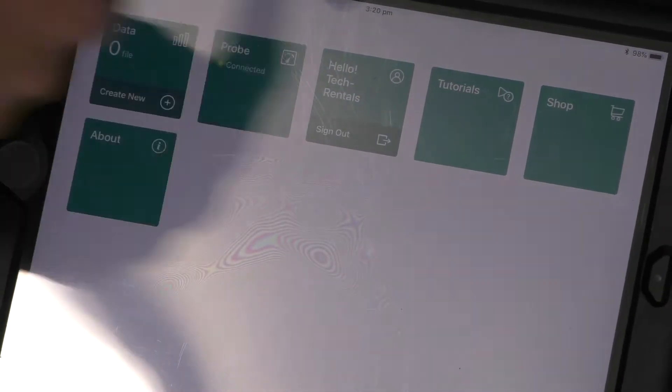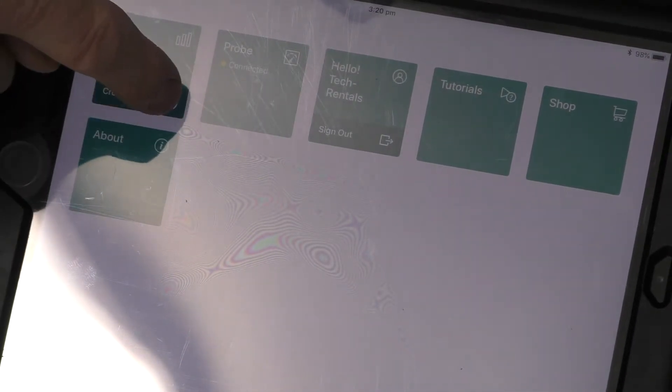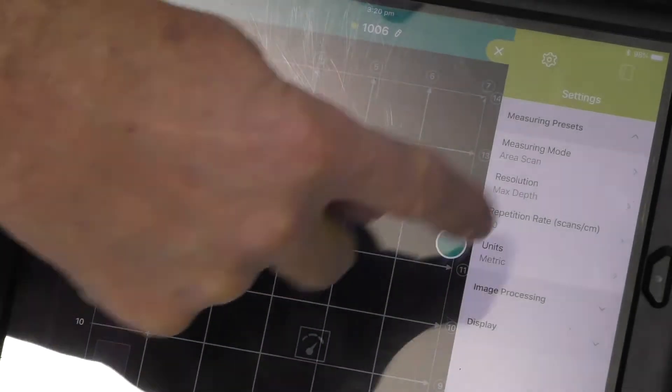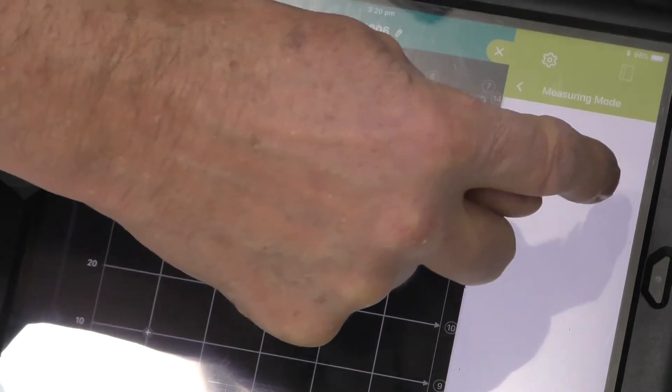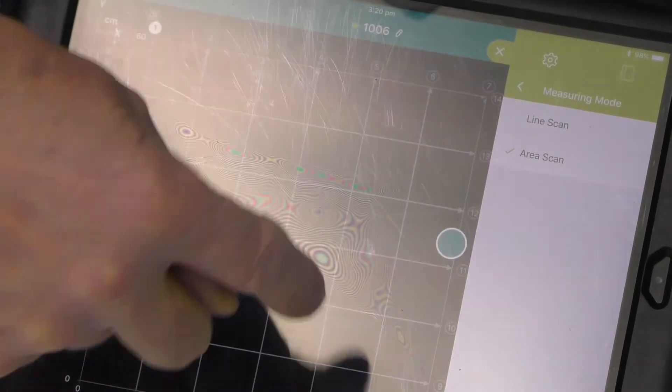Okay, to do an area scan, we have to be on this panel. Now we hit create new, I hit plus. Now I need to select from here, make sure area scan is selected.